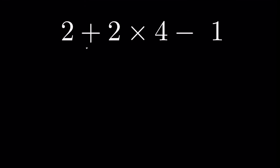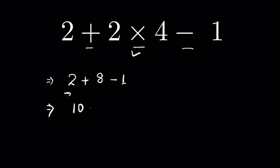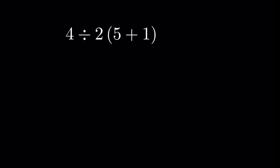We have addition, multiplication, and subtraction. According to the BODMAS rule, we first solve the multiplication: 2 multiplied by 4 is 8, giving us 2 plus 8 minus 1. Now going from left to right, addition comes first, so 2 plus 8 is 10, and 10 minus 1 is 9. That is your answer.